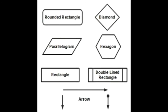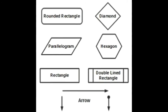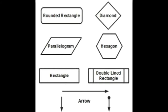The parallelogram is used to denote input or output of information. For example, the input can be a picture entered into the computer by scanning, the process can be editing it, and the output can be a print of the new edited picture.